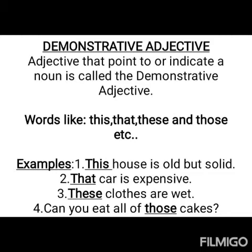The next one is demonstrative adjective. An adjective that points to or indicates a noun is called a demonstrative adjective — you are pointing out something and telling what it is. Words used are this, that, these, and those. For example: 'This house is old but solid' — pointing at the house. 'That car is expensive.' 'These clothes are wet.' 'Can you eat all of those cakes?' You are basically pointing out at something and describing it.